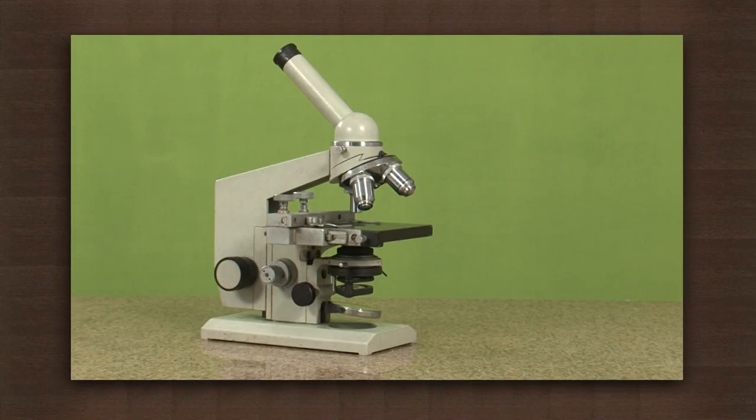You know that tiny microorganisms are present in the atmosphere and are invisible to the naked eye. But how do scientists actually study these microbes? They use an instrument called the compound microscope. Let us have a look at the parts of a microscope.